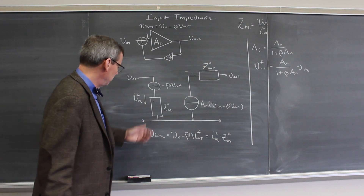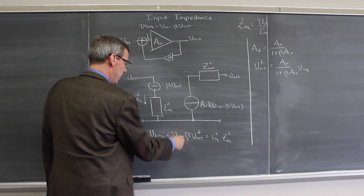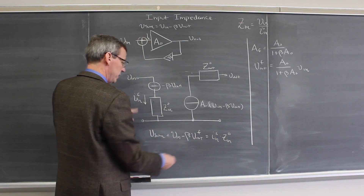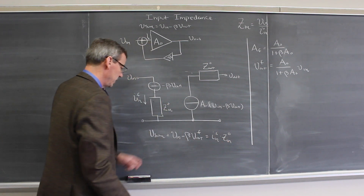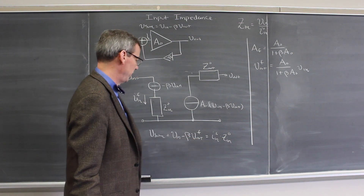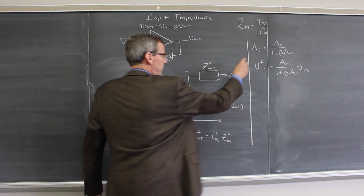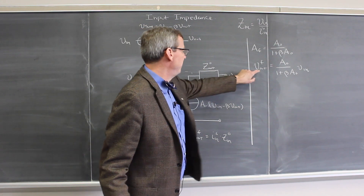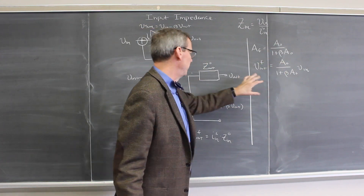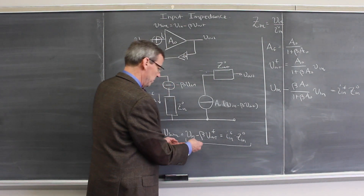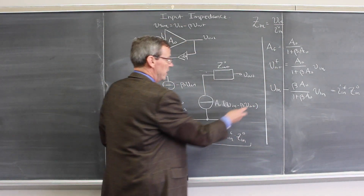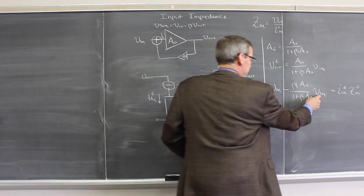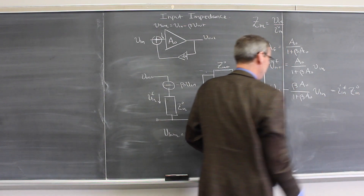So we can write a relationship here: Vsum, the voltage here, is Vn minus beta·Vout. That has to equal the current flowing through the input impedance times that input impedance. So: I_in(feedback) times Zin(0) equals Vn minus beta·Vout(feedback). The gain with feedback, A_F, is A0 over (1 + beta·A0), and Vout with feedback is that gain times the input voltage. We substitute Vout in: Vn minus beta·[A0 / (1 + beta·A0)]·Vn equals I_in(feedback) times Zin(0).